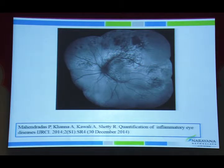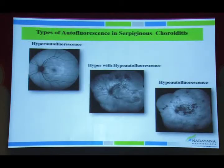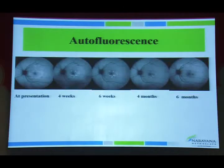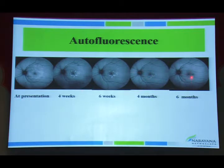Dr. Vishali described four characteristic autofluorescence patterns in serpiginous-like choroiditis. There are three patterns: hyperautofluorescence for active lesions, hypoautofluorescence for completely healed lesions, and a mixed hyper-hypo pattern during the healing phase. In macular epigenous choroiditis, at presentation there can be hyperautofluorescence; during healing there is a mixture of hypo and hyper; and at six months when completely healed, only hypoautofluorescence remains.